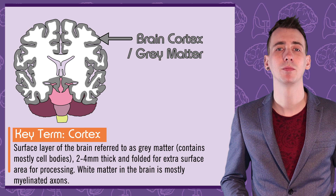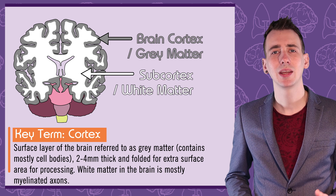White matter, on the other hand, is mostly myelinated axons with few cell bodies, giving it a white appearance.